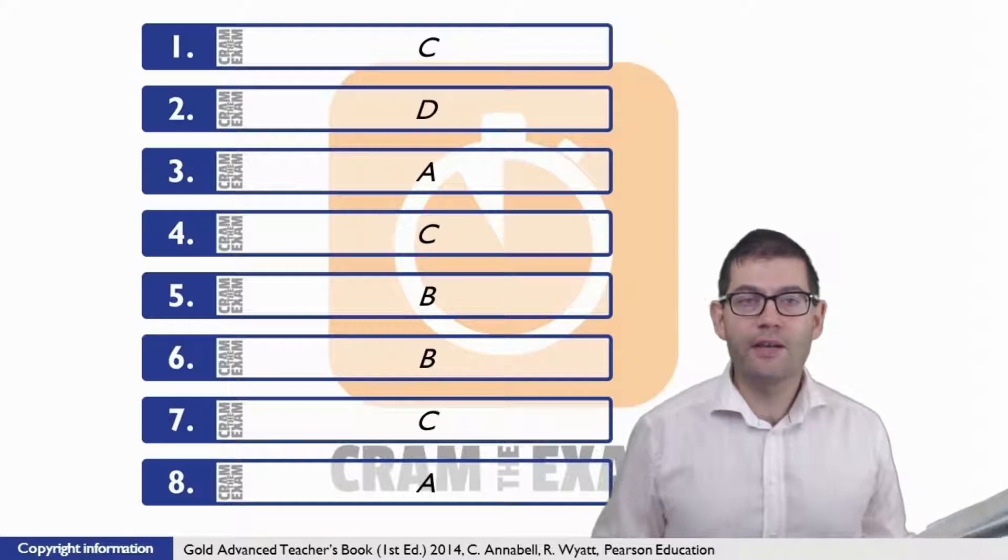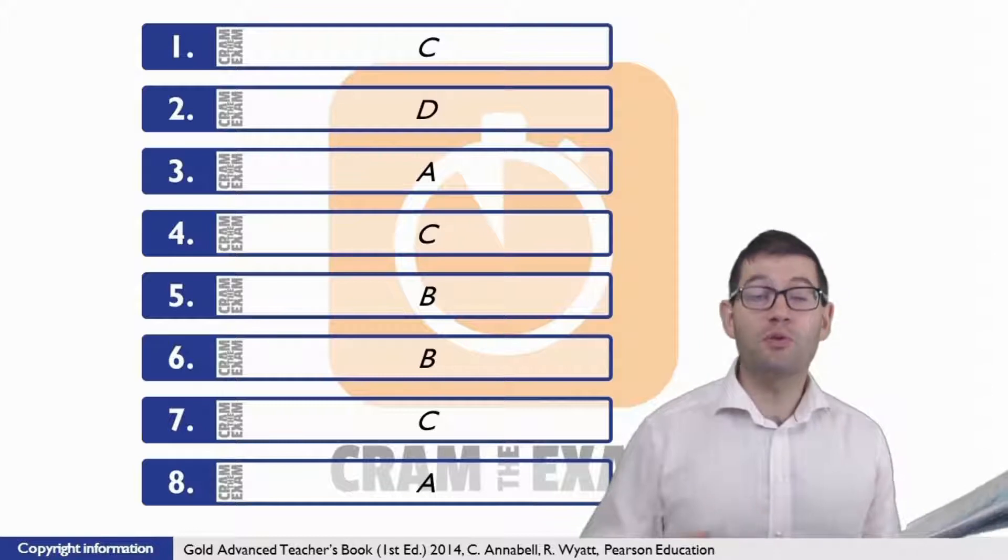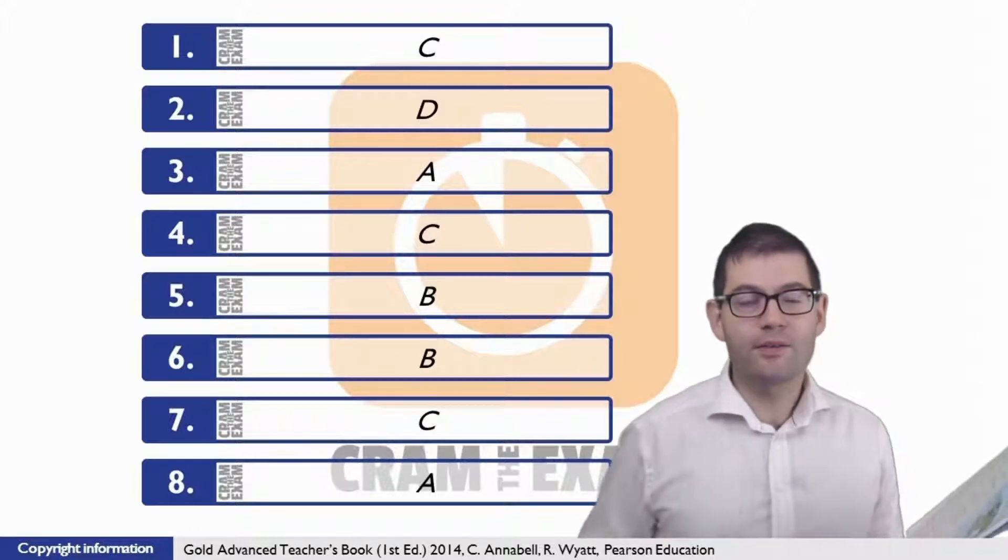Question number one: simple vocabulary collocation. If you're going on a date with someone and you don't know who that person is, this is what we call a blind date. So here the answer is C.